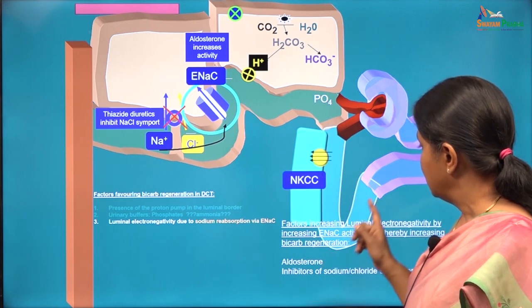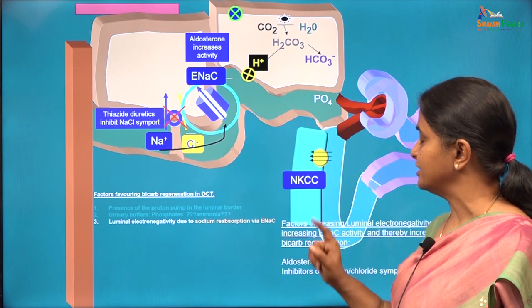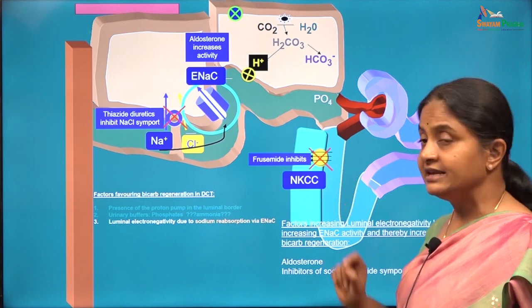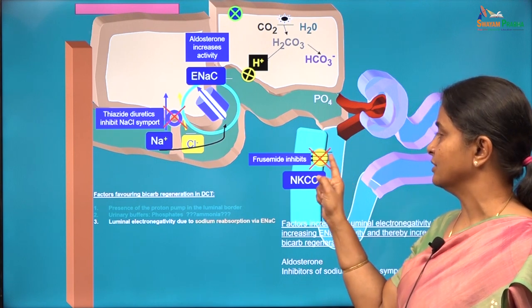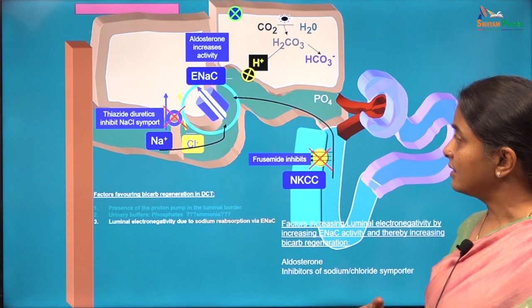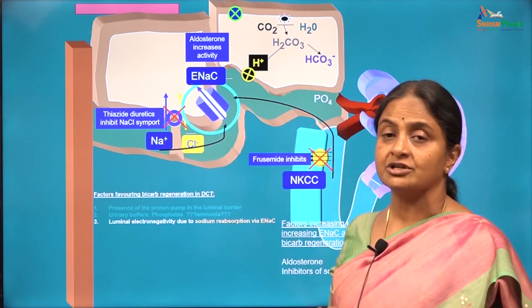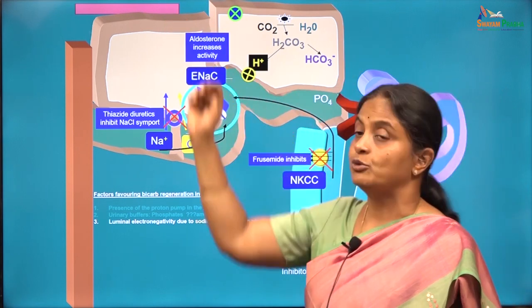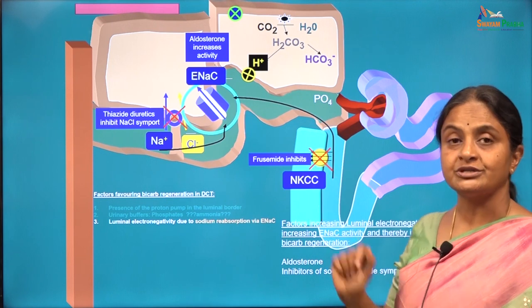Similarly, in the loop of Henle the luminal transporter is the sodium-potassium-2-chloride symporter. The loop diuretic furosemide inhibits this transporter. If sodium is not removed at the loop of Henle, all that sodium arrives at the distal tubule and must be reabsorbed by both ENACs and the sodium-chloride symporter. Any enhanced transport via ENACs increases luminal electronegativity, pulls more protons, provides more bicarbonate to plasma — resulting in alkalosis. Furosemide, the loop diuretic, will also result in alkalosis.